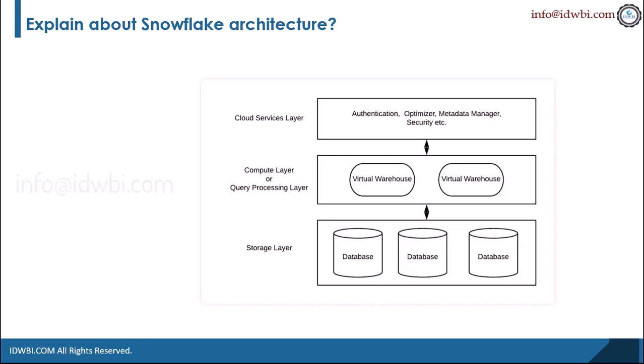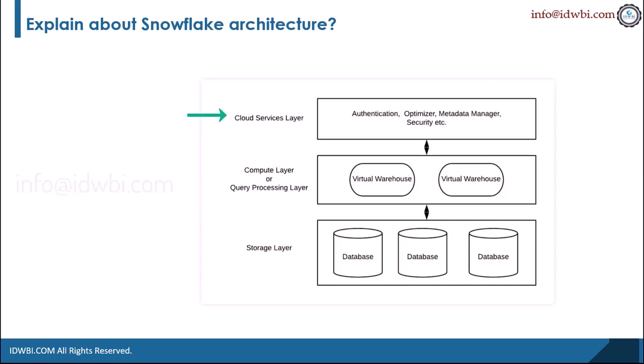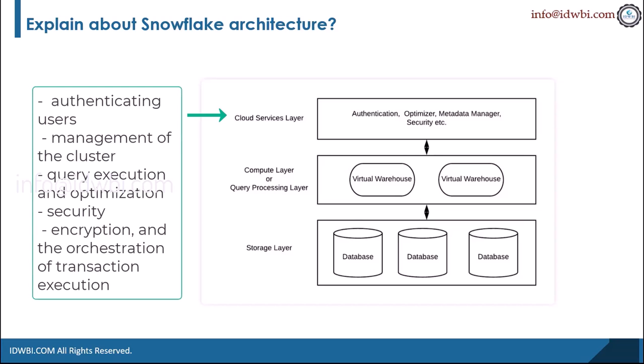The cloud services layer is the most important layer within the Snowflake architecture — this is where all the intelligent action happens. It performs functions like authenticating users, management of the cluster, query execution and optimization, security, encryption, and the orchestration of transaction execution. This layer runs on stateless compute nodes that span the entire data center.